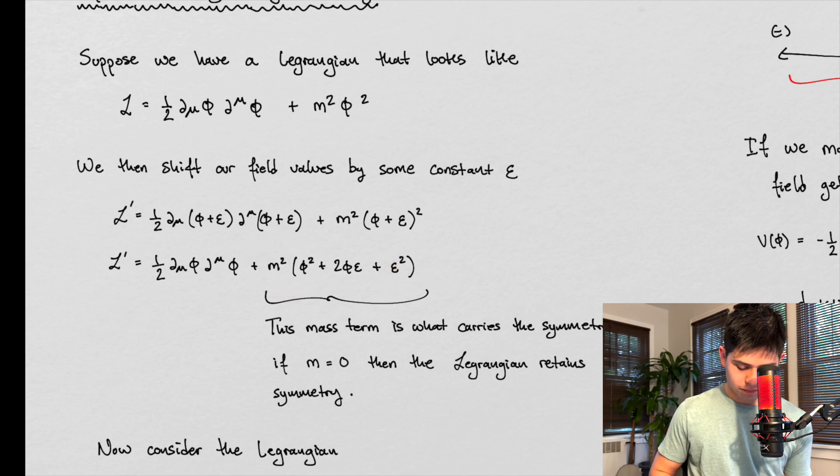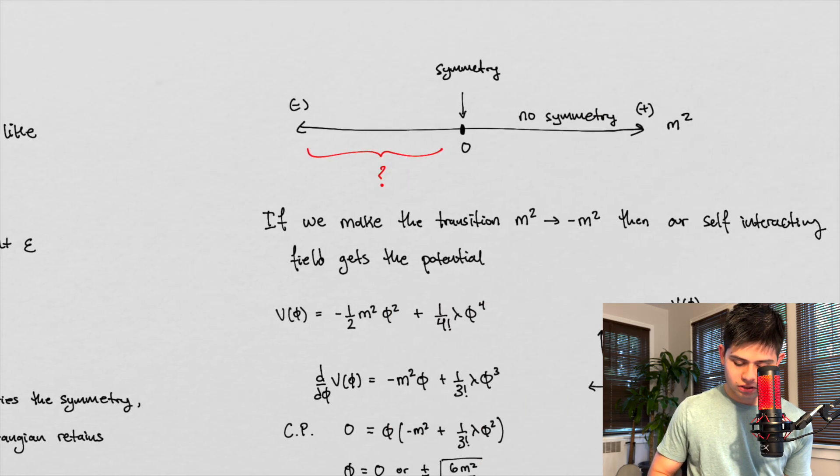If the mass was not zero or positive, that means if this is positive, then that means there is no symmetry, right? The mass, again, is what carries sort of the non-symmetry part of our Lagrangian.